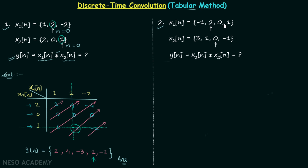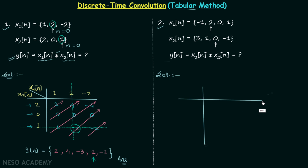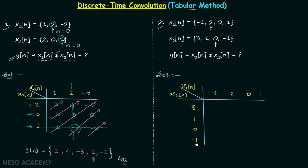Now let's move on to the second example. We draw the table and write the values of x1n horizontally: minus 1, 2, 0, 1. We write the values of x2n vertically: 3, 1, 0, minus 1.